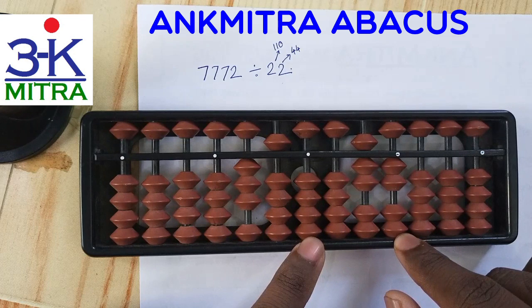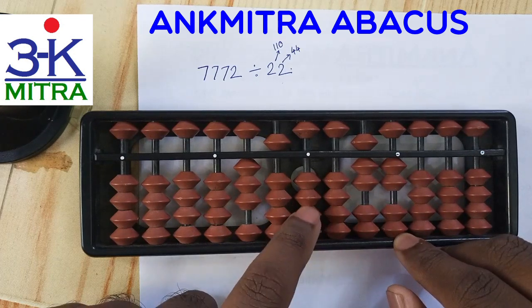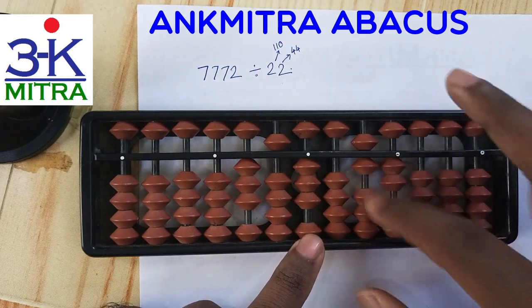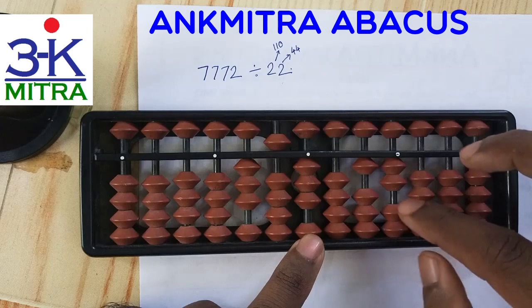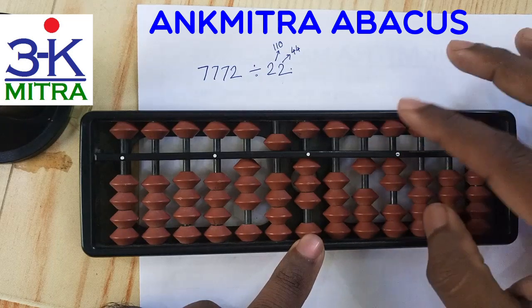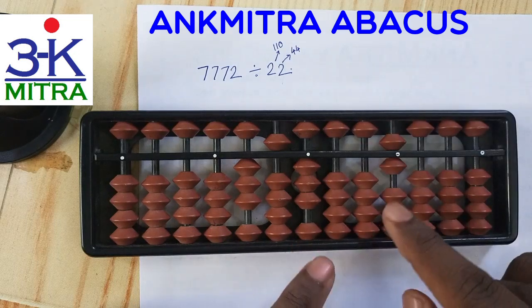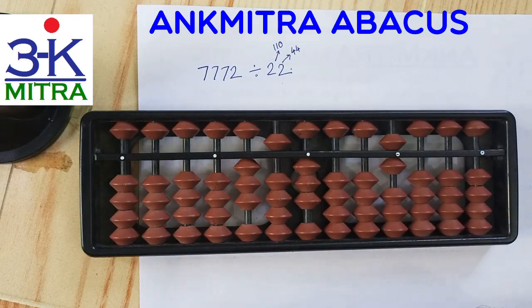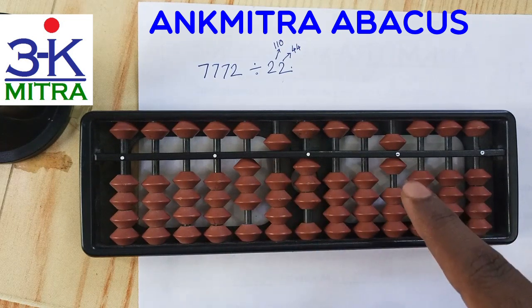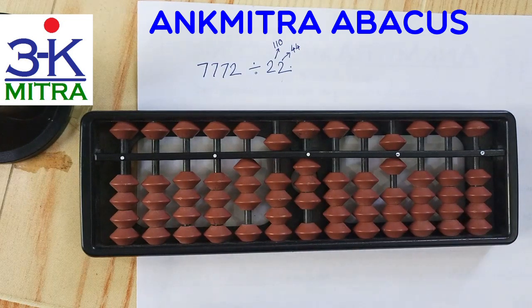From 72, we can subtract 3 times 22 which is 66. I take 3 on the units place of the answer set and subtract 66: minus 6 in this fashion, and for minus 6 on the other rod I do plus 4 minus 10. We have the final answer: 353 as the quotient and 6 as the remainder.